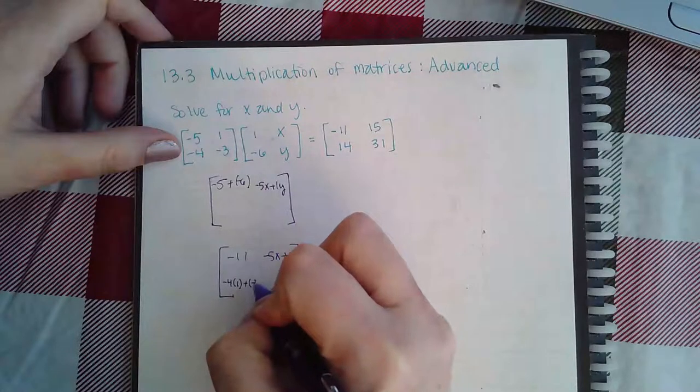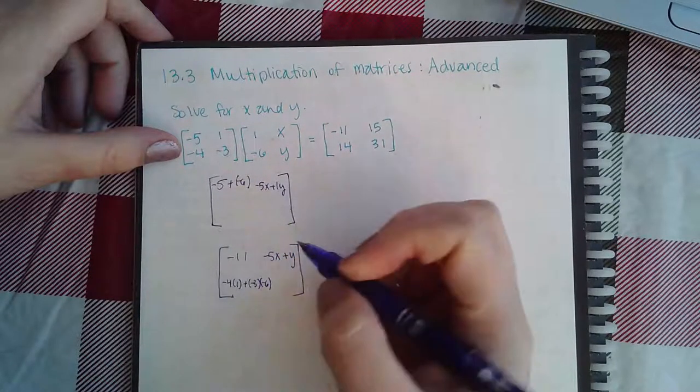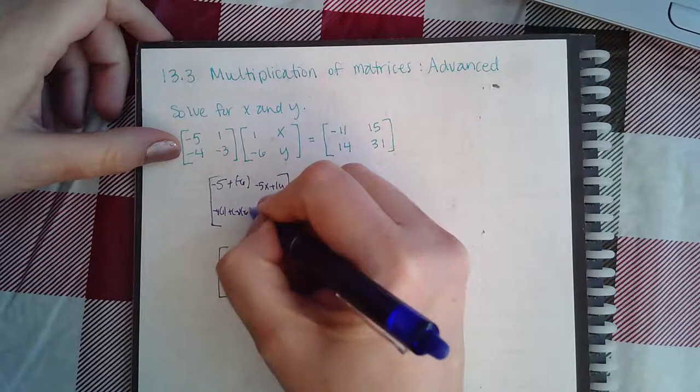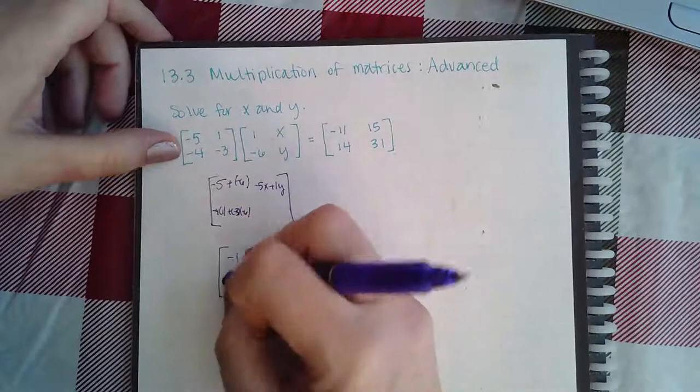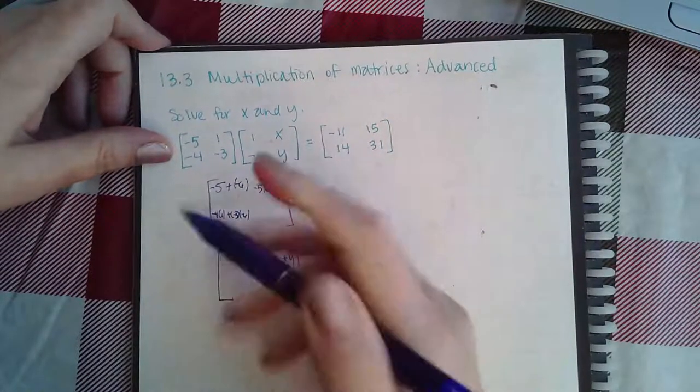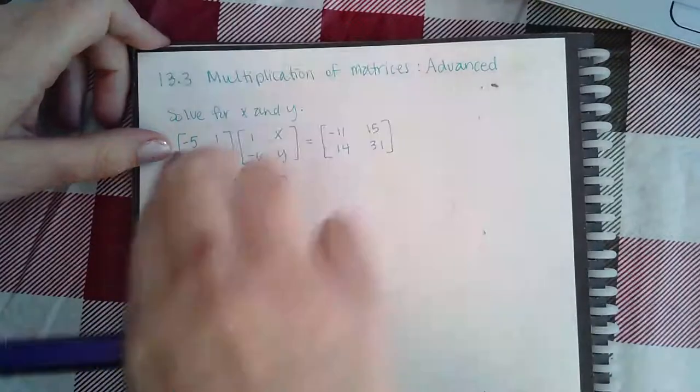1 plus negative 3 times negative 6... oh I wrote that in the wrong one. So then I end up with negative 4 plus 18 which is a positive 14.